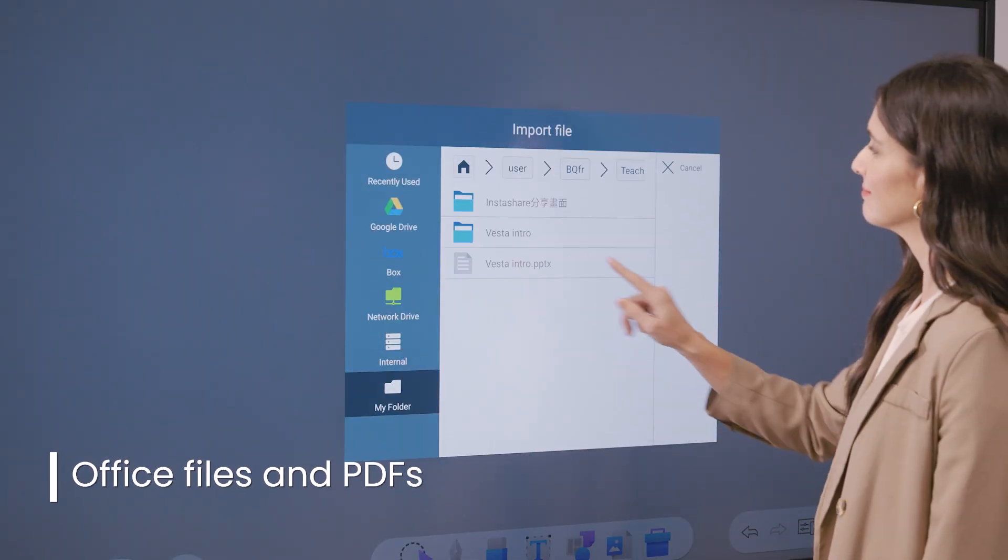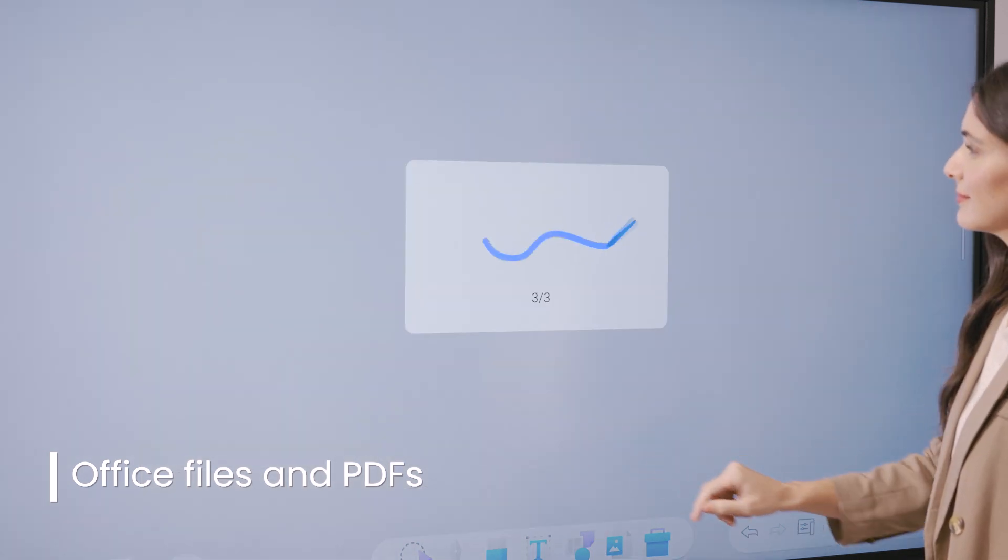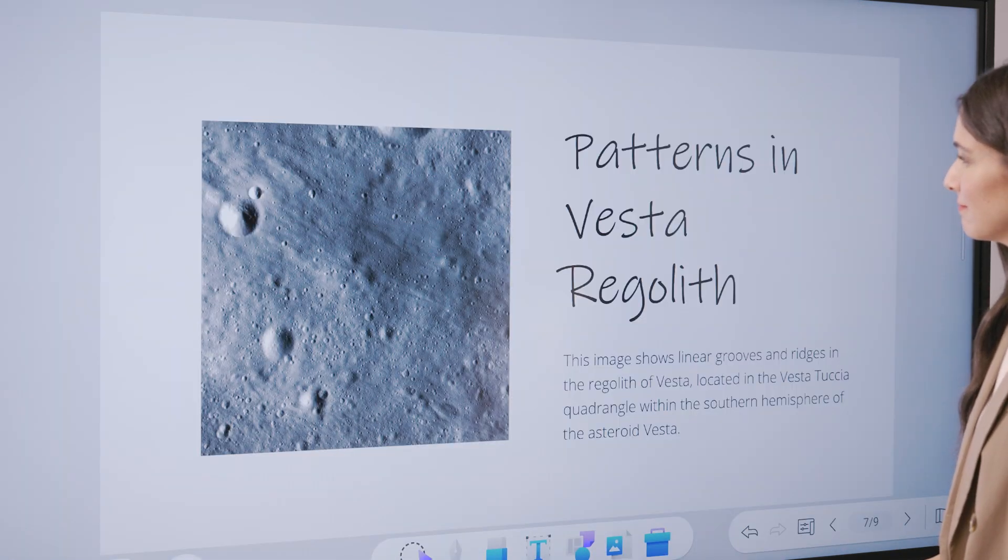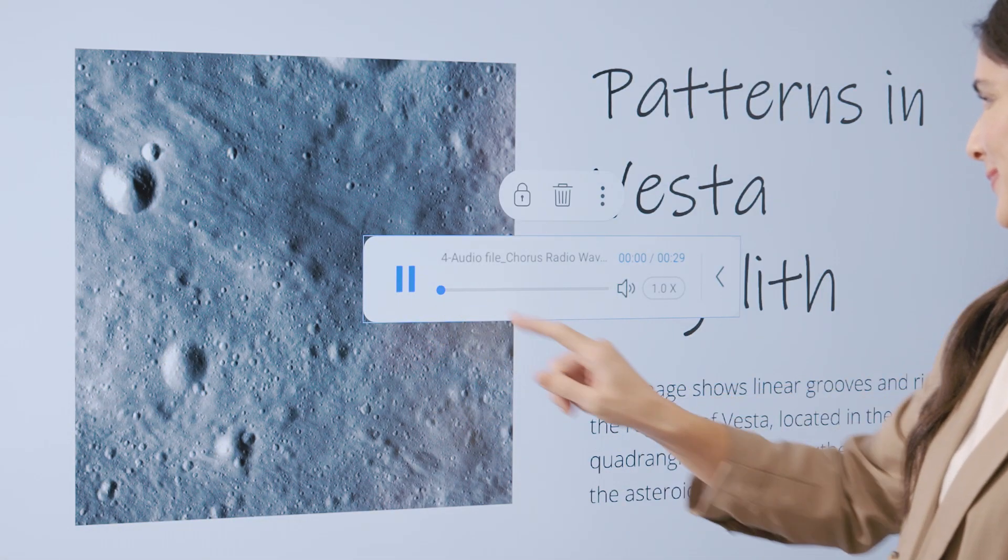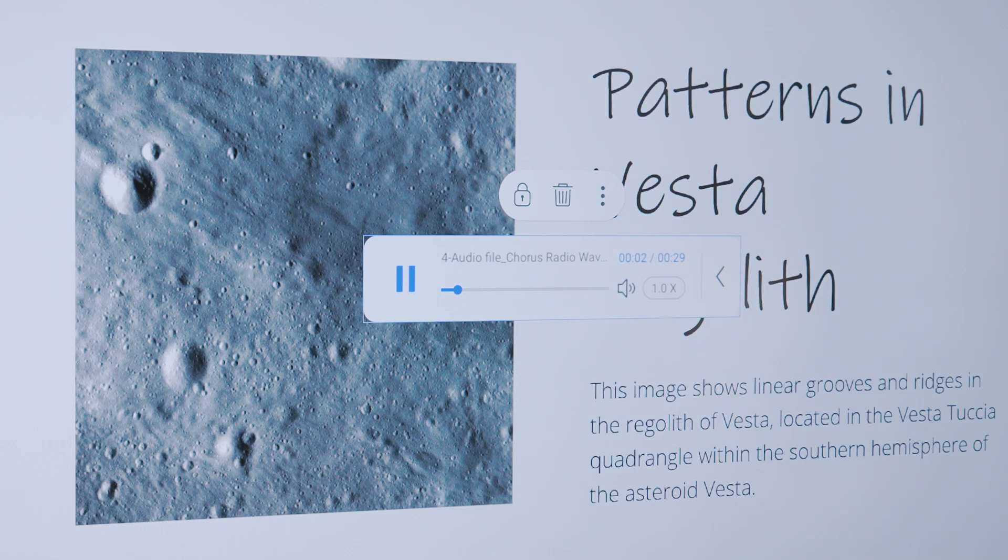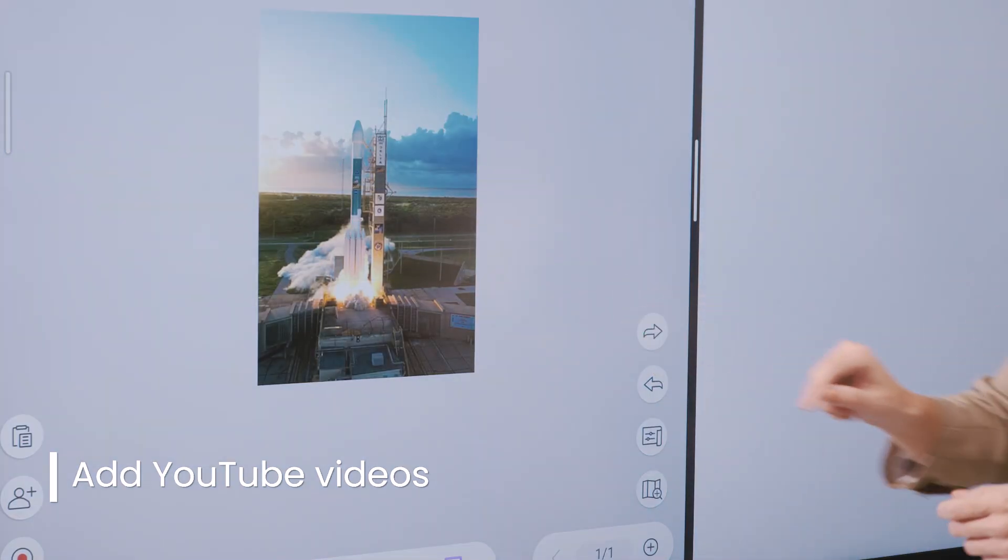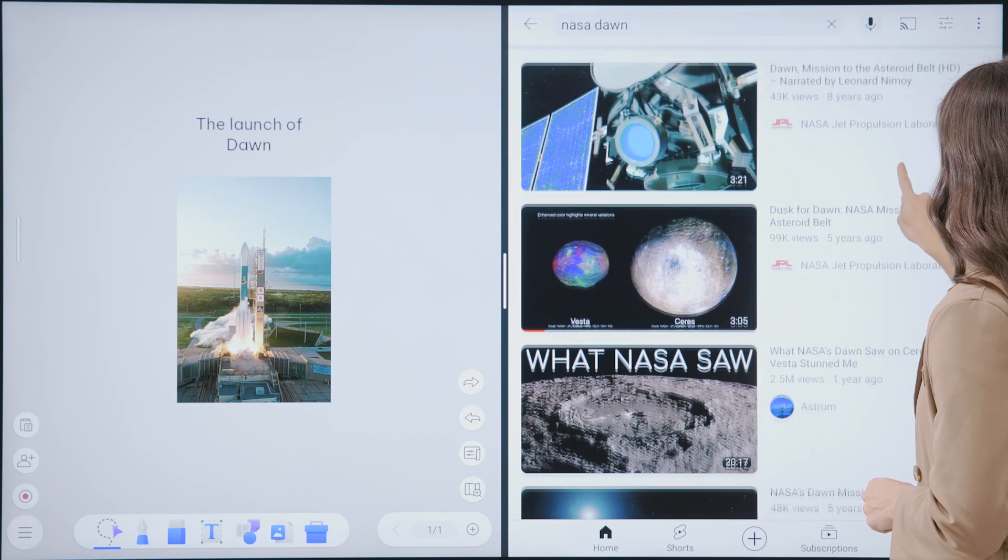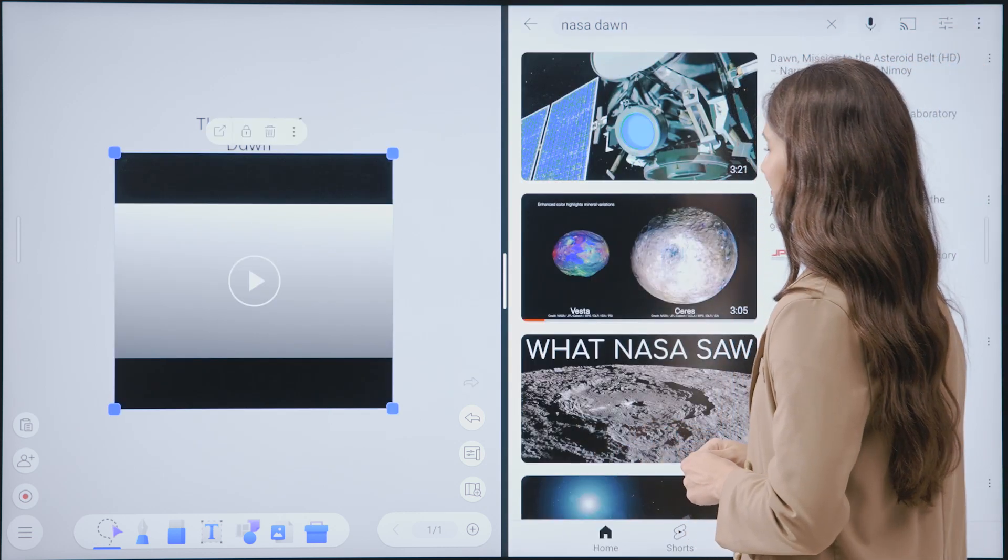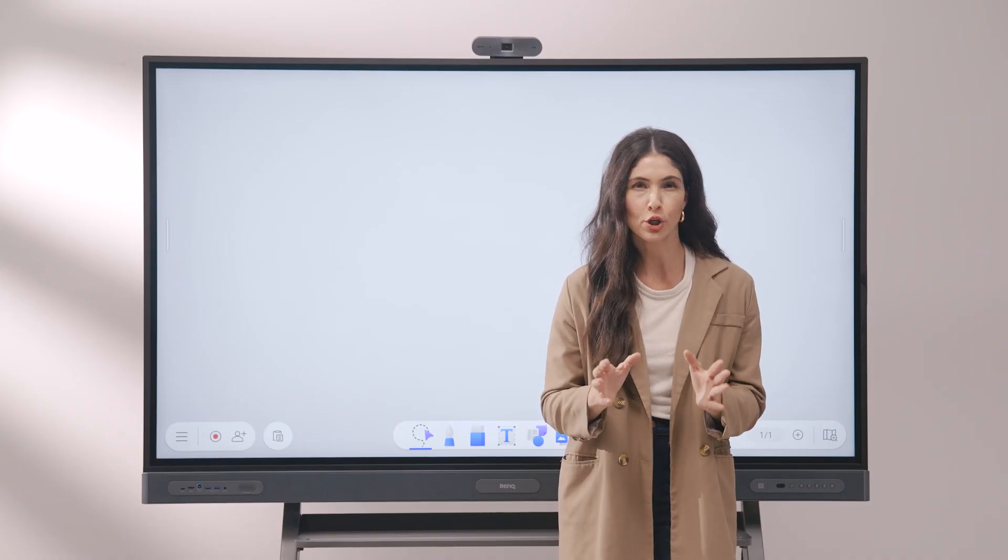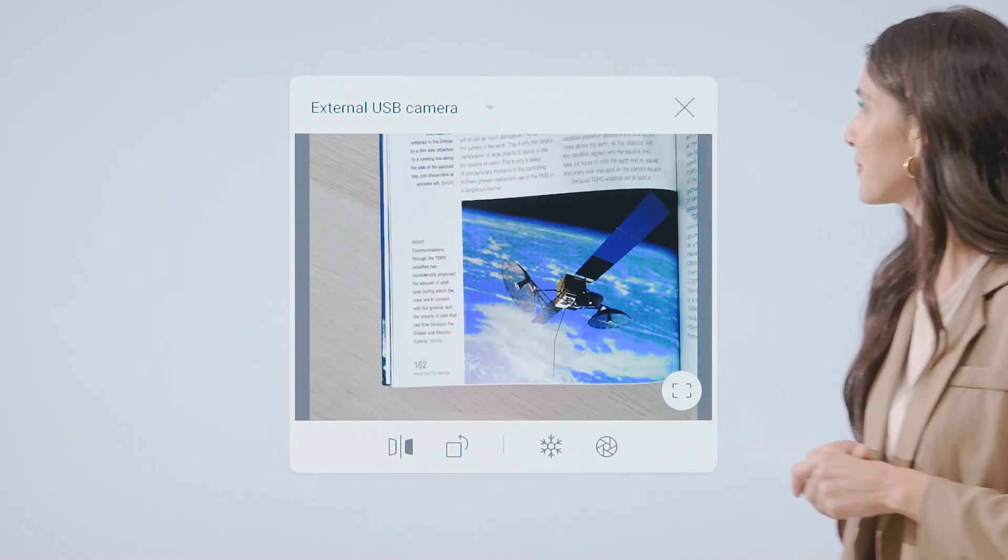You can import entire office files and PDFs or specific pages from those documents. You can also import video and audio files to liven up your lessons. You can also search for YouTube videos and seamlessly add them to your lessons. And if you want to show physical objects or textbooks on the board, you can use a document camera and display experiments or printed materials.